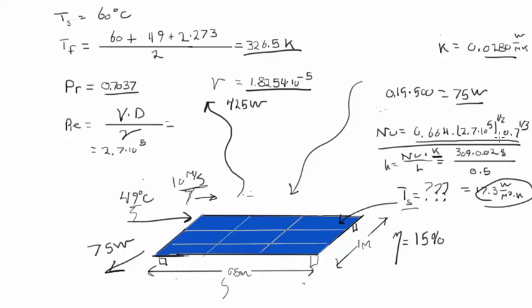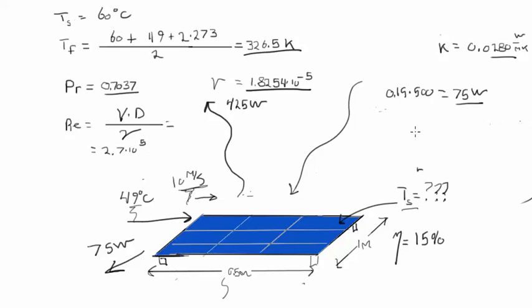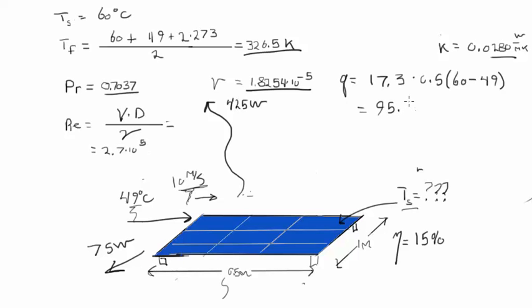This is our value. Now we use Newton's law of cooling. We have our conduction coefficient of 17.3. We calculate Q, which is 17.3 times the area 0.5 times our delta T. We said it was 60 minus 49 degrees, which gives a value of 95.15 watts.